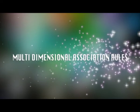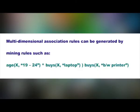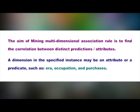Let us see what is a multi-dimensional association rule. Most algorithms and methods concern only the rules of association within a single attribute and Boolean data — all about the same attribute where the value can only be yes or no, 1 or 0. Multidimensional association rules can be generated by mining rules in various dimensions. For example, a person X in the range of 19 to 24 who buys a laptop also buys a black and white printer. The aim is to find the correlation between distinct predictions and attributes. A dimension in the specified instance may be an attribute or a predicate such as era, occupation, and purchases.